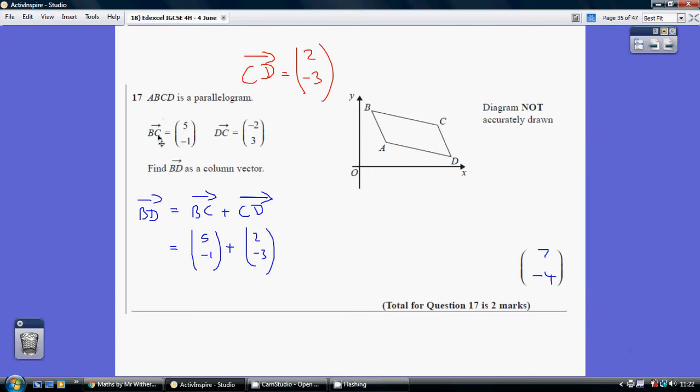Question 17. We were told that B to C is this vector - that's 5 along and 1 down. And we're told that D to C is 2 to the left and 3 up.